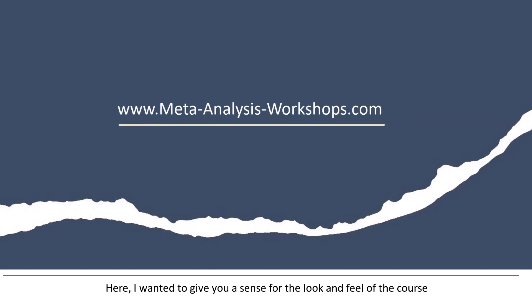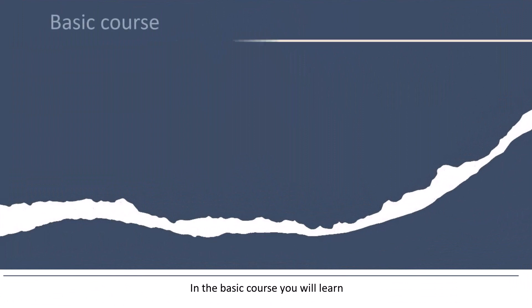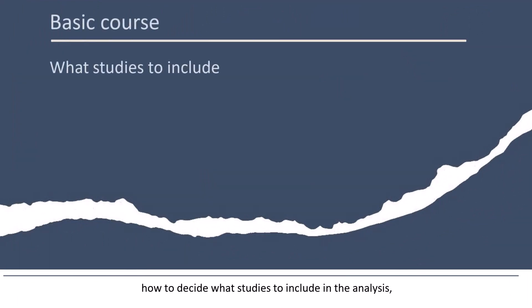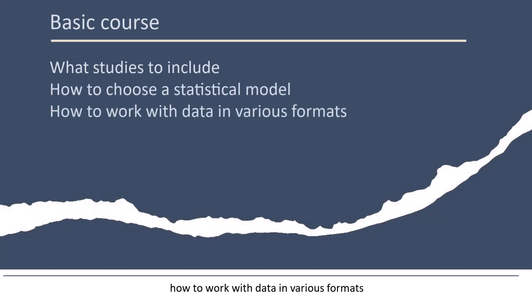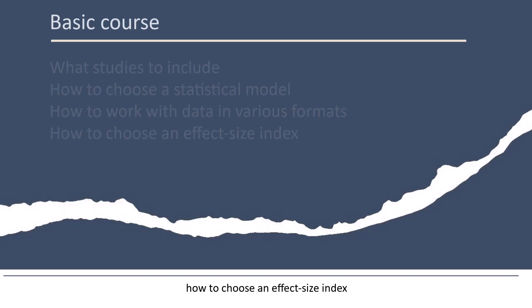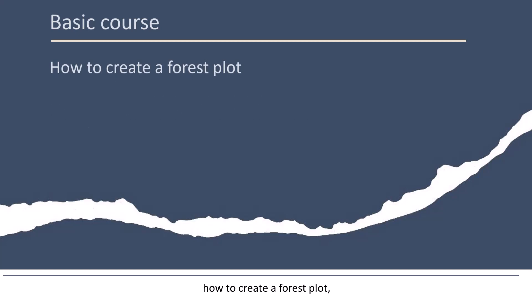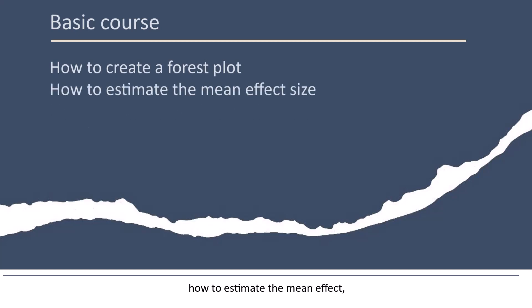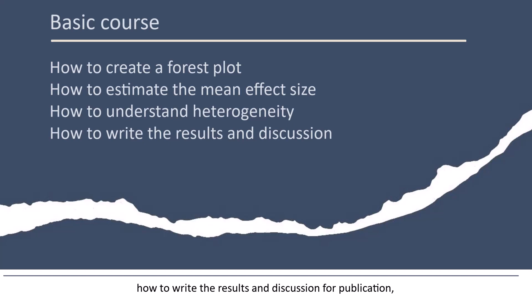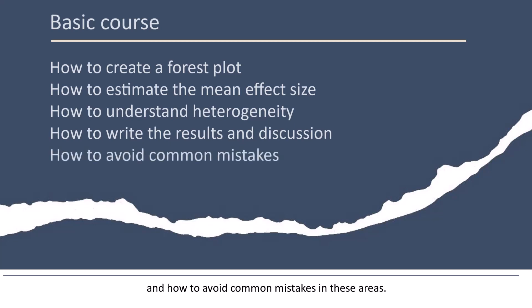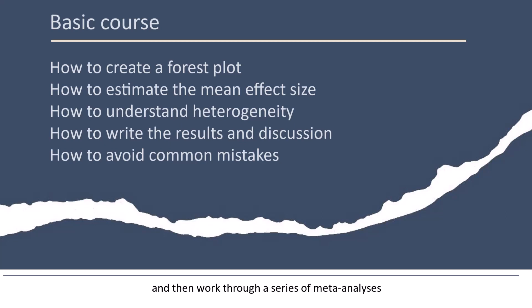Here I wanted to give you a sense for the look and feel of the course. In the basic course, you'll learn how to decide what studies to include in the analysis, how to choose a statistical model, how to work with data in various formats, how to choose an effect size index, how to create a forest plot, how to estimate the mean effect, how to understand heterogeneity, how to write the results and discussion for publication, and how to avoid common mistakes. I'll explain each of these concepts and then work through a series of meta-analyses so we can see how the concepts are applied in practice.